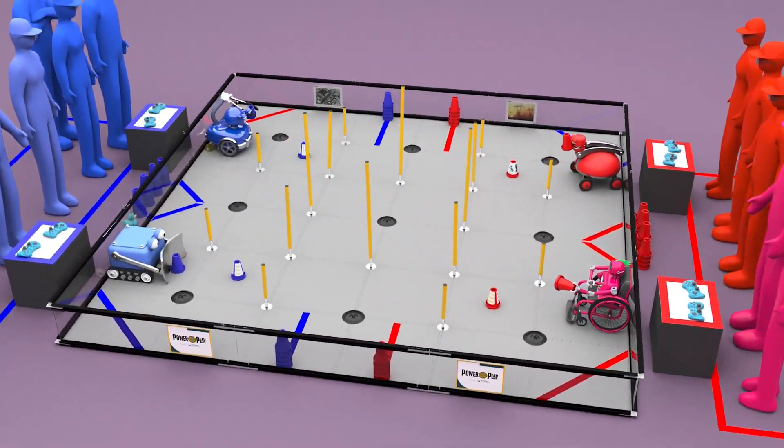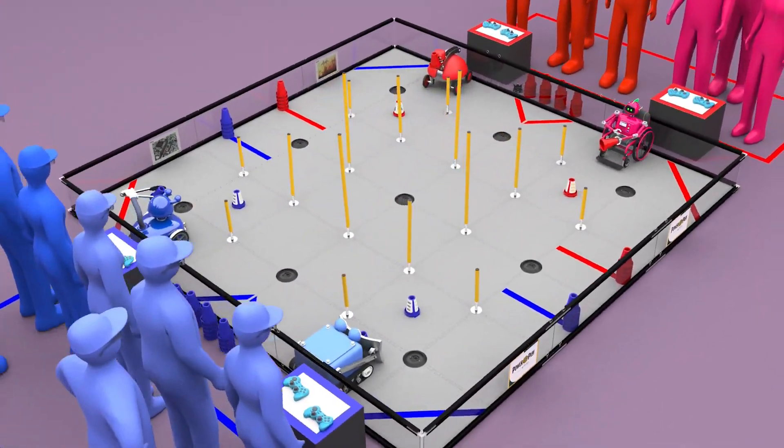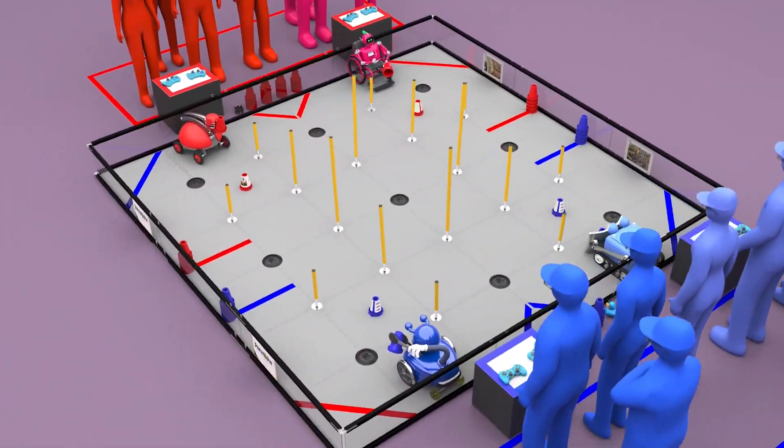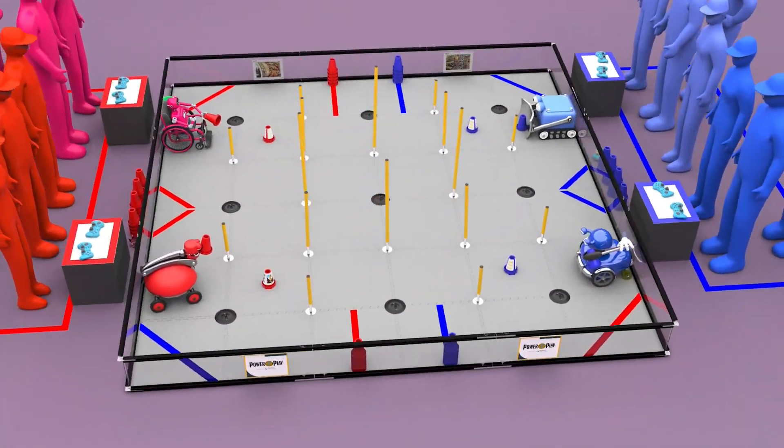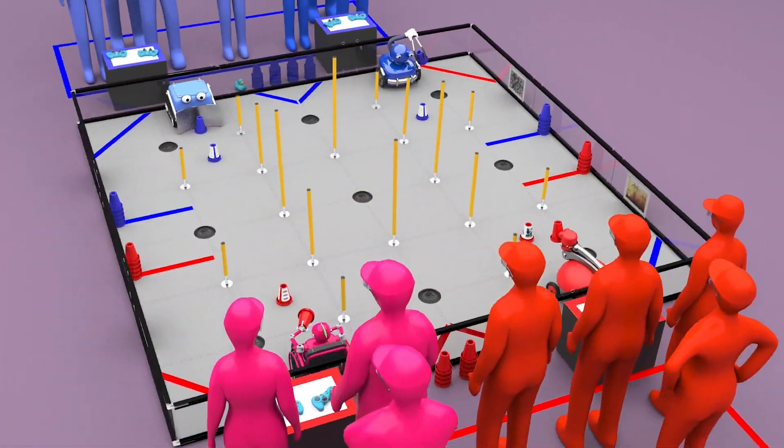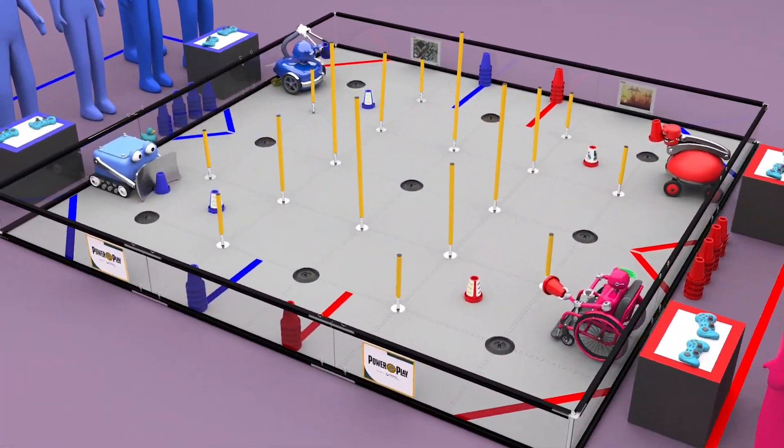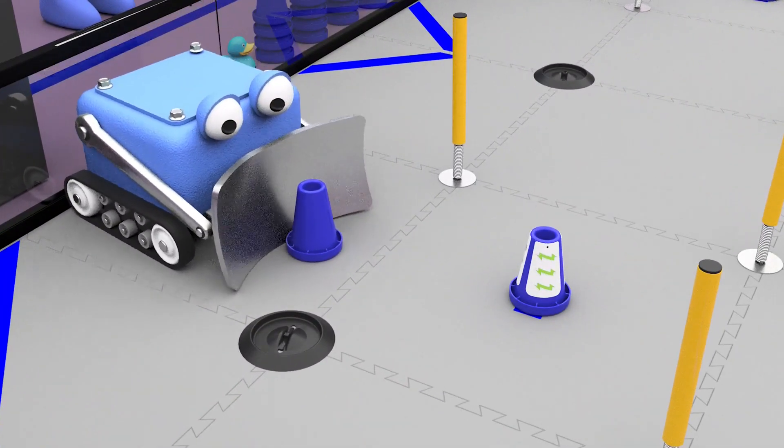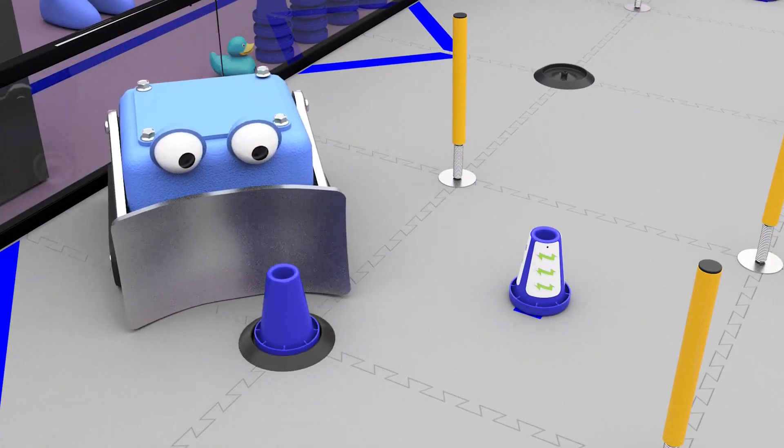The match begins with a 30-second autonomous period. During this period, there are a number of ways for teams to score using only pre-programmed instructions and sensor inputs. Each cone secured on a junction earns points.